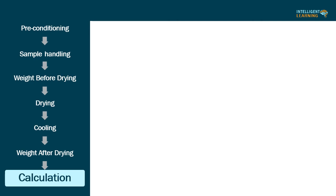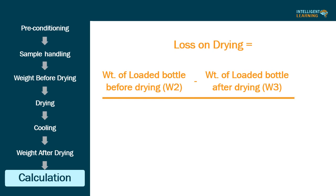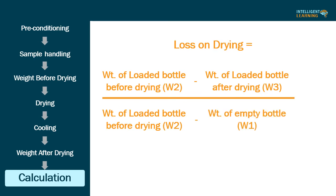Seventh step: calculation of loss on drying. Calculate loss on drying as: weight of loaded bottle before drying (W2) minus weight of loaded bottle after drying (W3), divided by weight of loaded bottle before drying (W2) minus weight of empty bottle (W1), multiplied by 100.